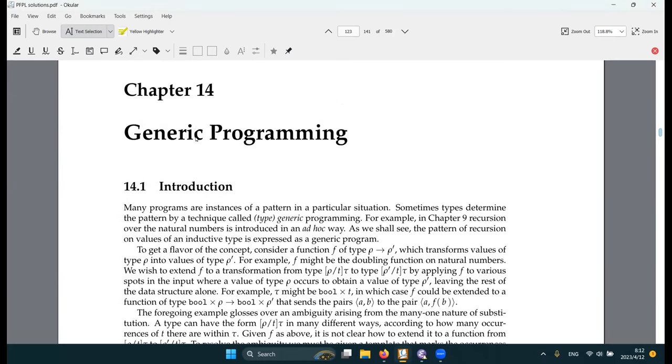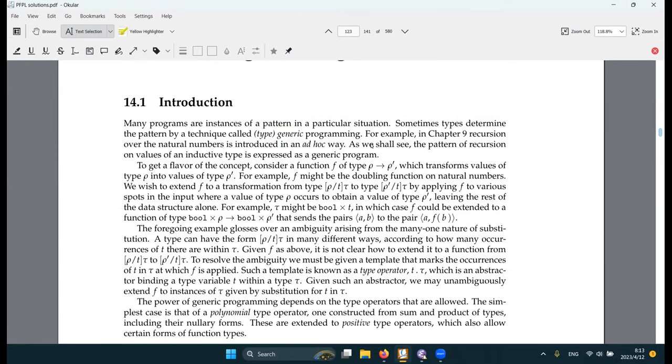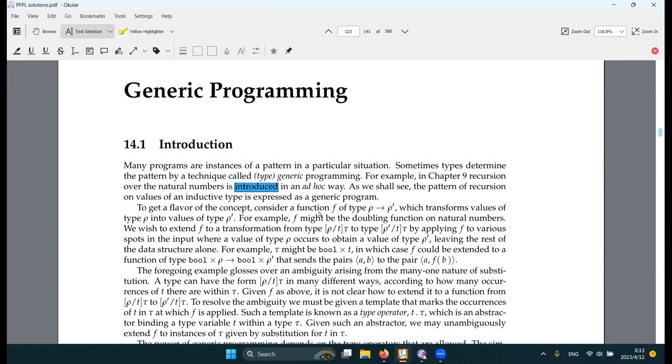So chapter 14 introduced this idea of generic programming. Unfortunately, without chapter 15, where we have inductive types, we don't see much application of generic programming yet. It talks about how recursion over natural numbers is introduced in an ad hoc way. We just introduce a natural number type and then the recursion. But we can actually, if we model natural numbers as one type of inductive types, then we will have the pattern of recursion value of an inductive type in general.